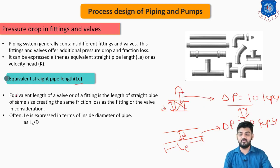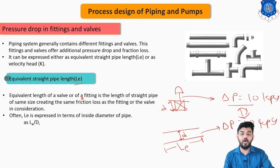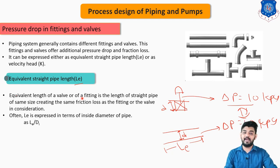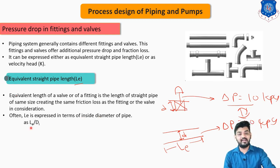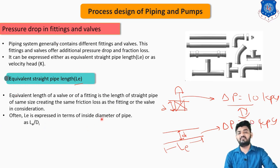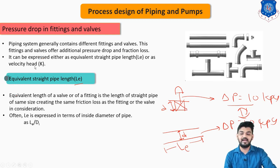This equivalent length is also expressed in terms of the inside diameter of the pipe as equivalent length divided by inside diameter — Le/Di. That is one way to express the pressure drop from fittings and valves. Another way is the velocity head, represented by capital K.